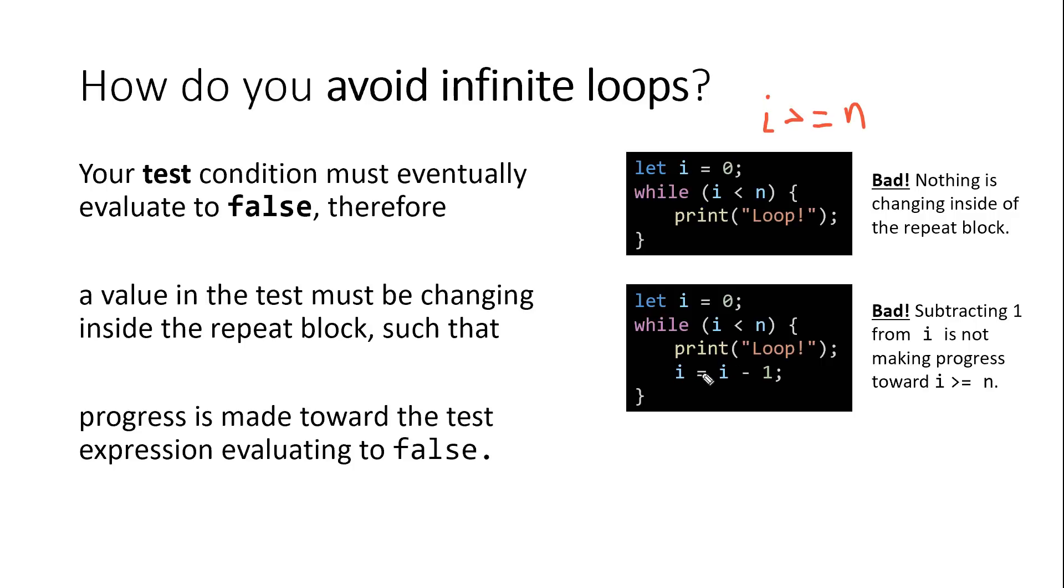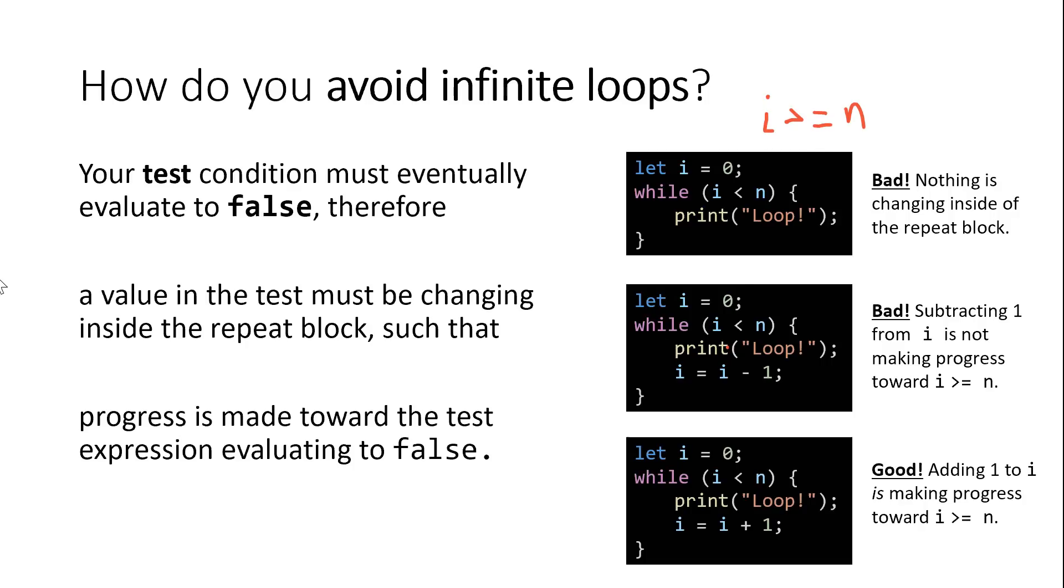So another example here that would lead to an infinite loop is if we were accidentally subtracting one from i each time we looped. So at the end of this repeat block, we're saying i is now going to be i minus one. So if i was zero, the second loop iteration, i would be negative one, negative two, negative three, negative four. In this case, we would not be getting any closer towards this statement becoming false because we're not moving closer to i being greater than or equal to n. So if you want to avoid writing an infinite loop, you must be careful to ensure that something inside of the loop is changing one of the terms in your test expression. And not only that, but the way that that term is changing is bringing you closer towards that expression evaluating to false.